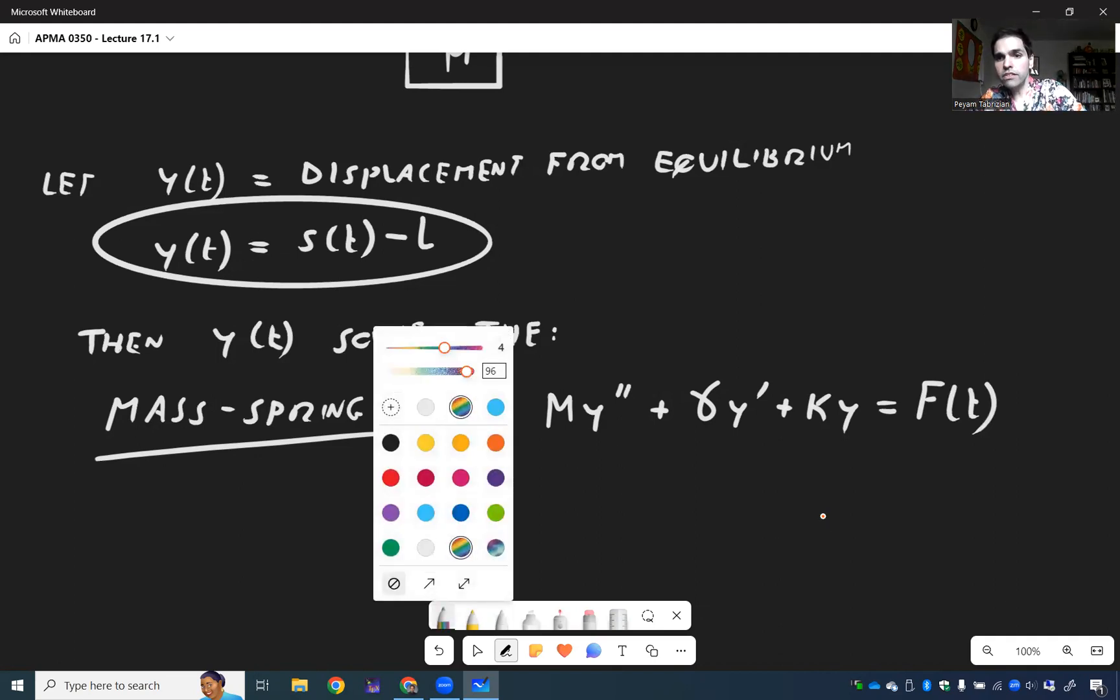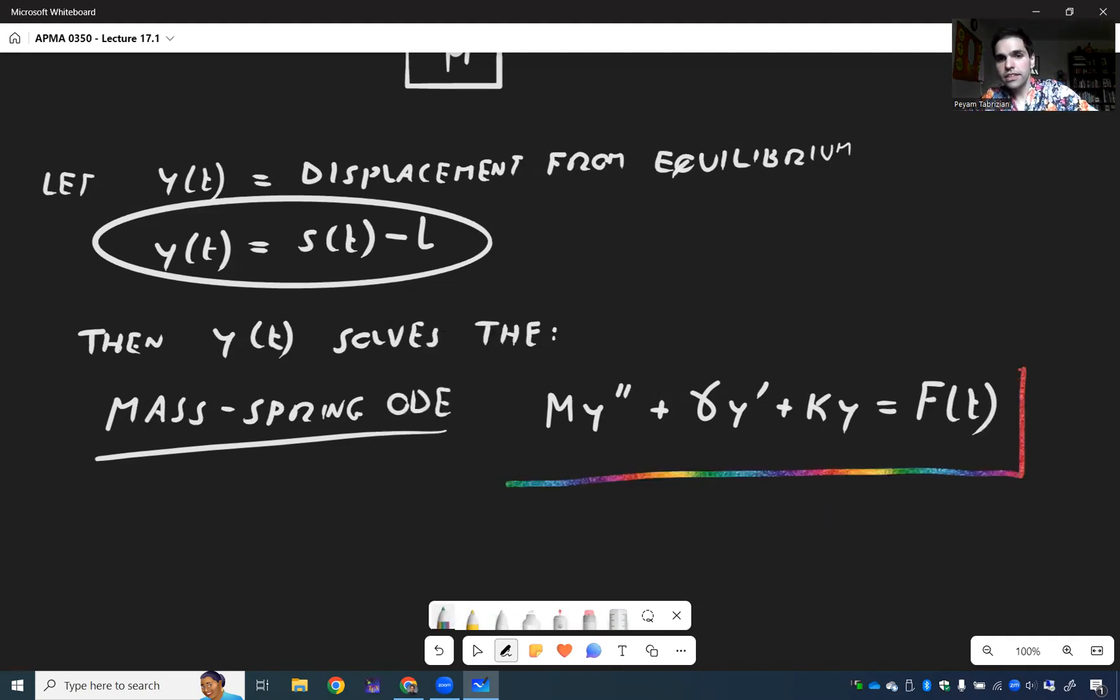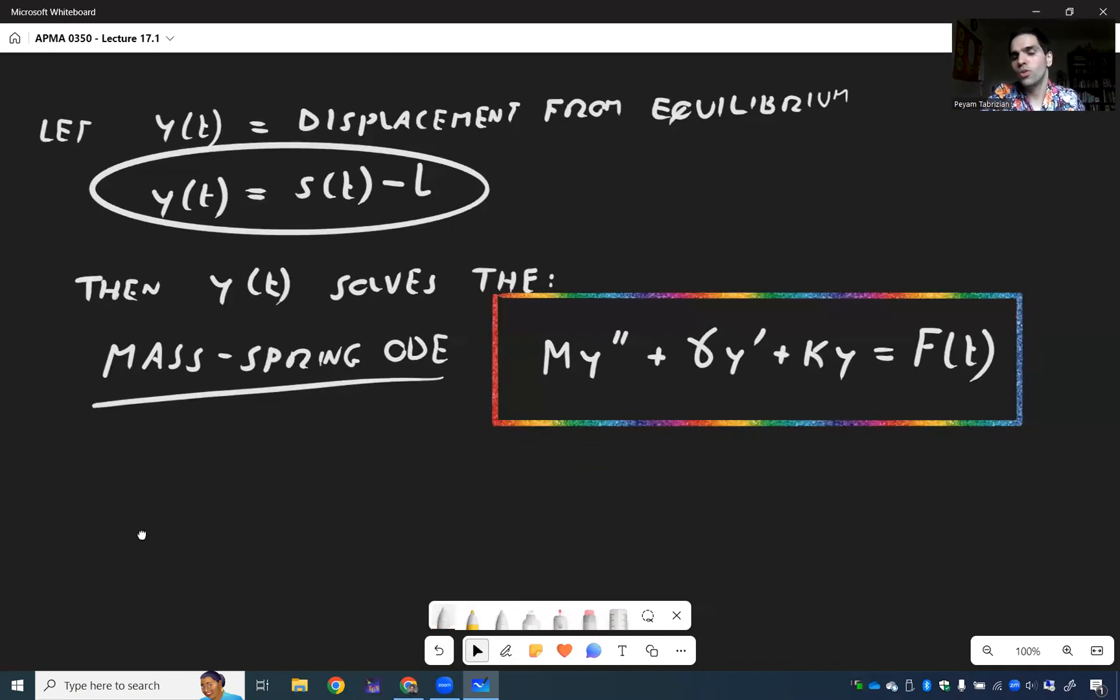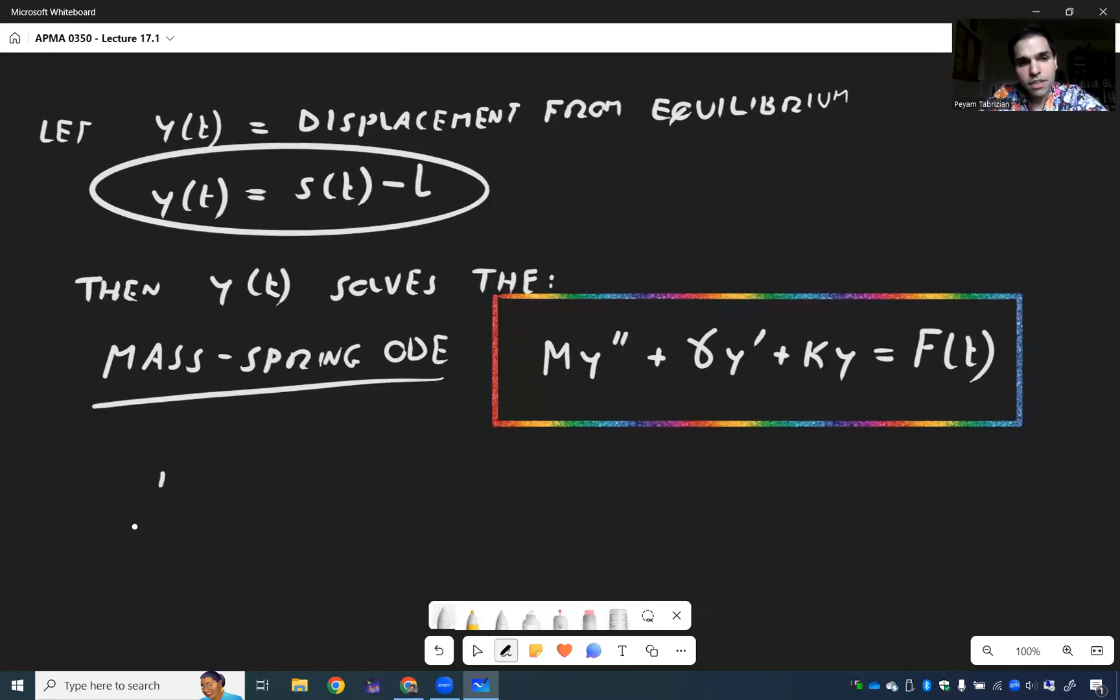So it turns out if you consider this mass on the spring, then the displacement solves this ODE. Now, what do all those letters mean? So M is the mass.